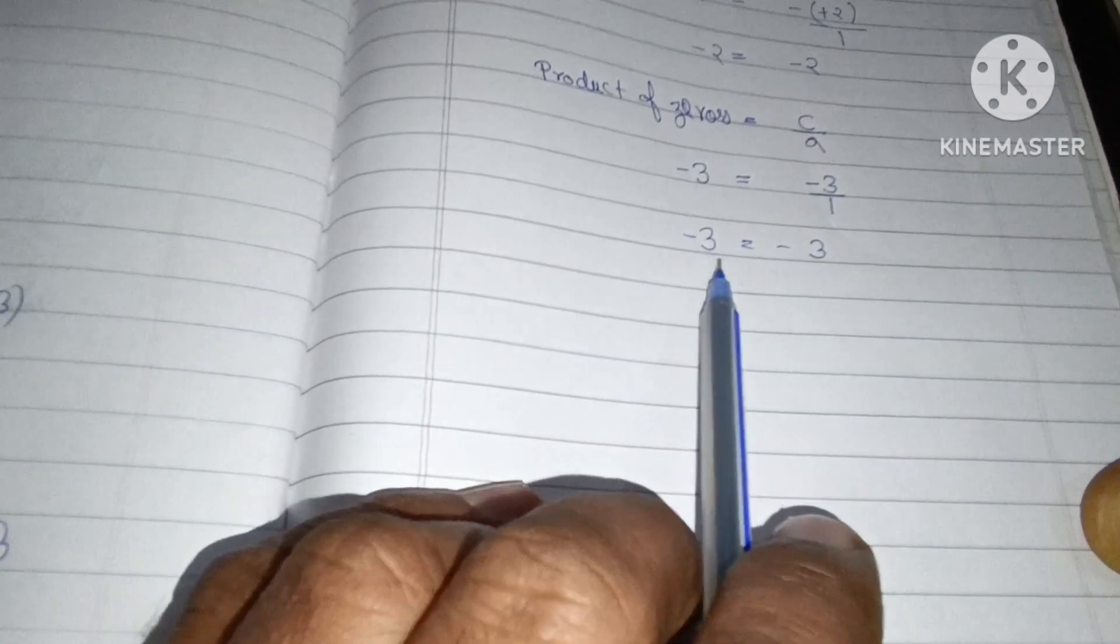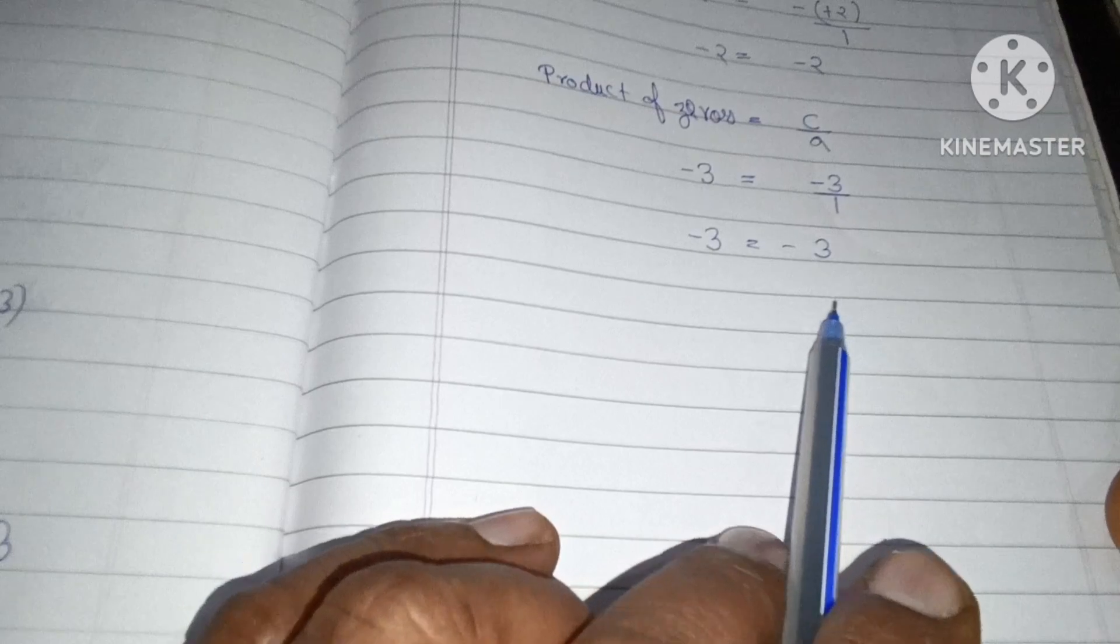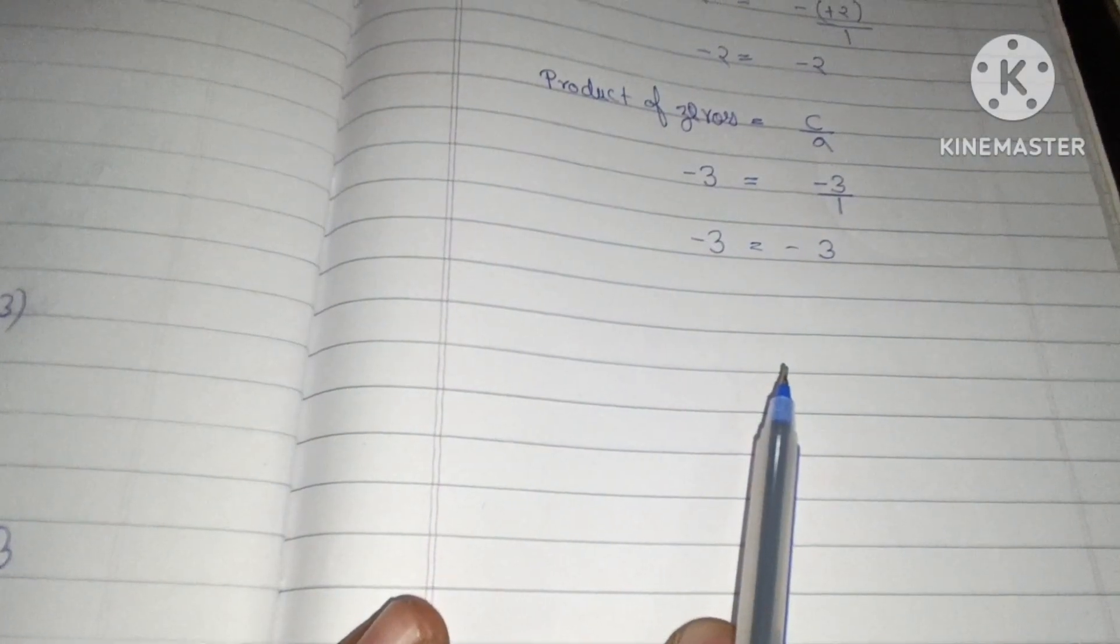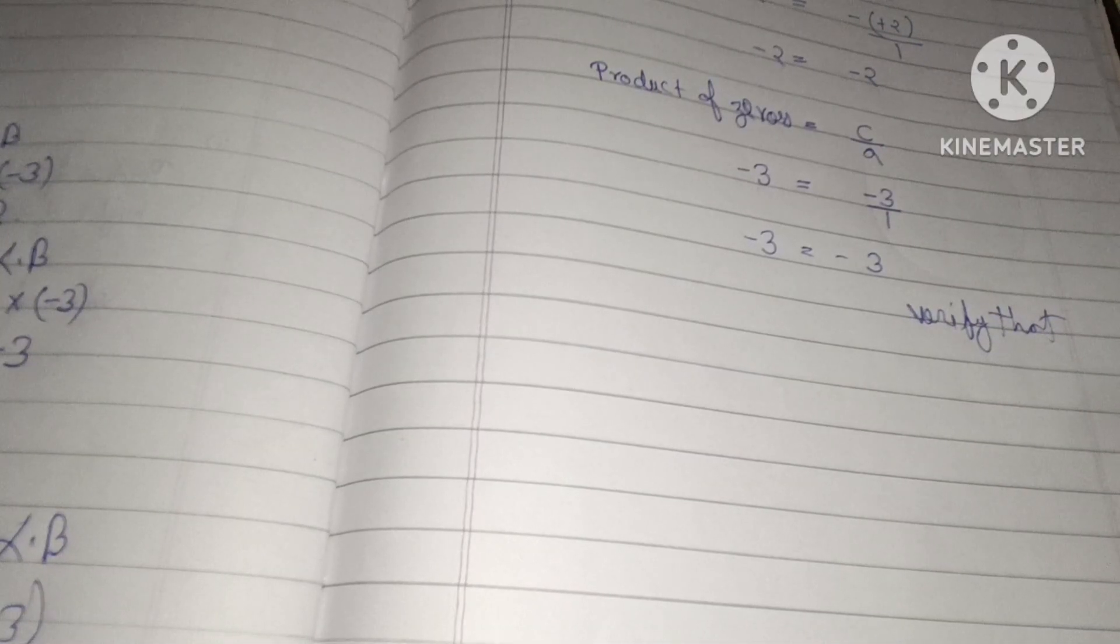To yahan proof ho gaya: product of zeros equal to minus 3 equal to minus 3. Verified. Thank you.